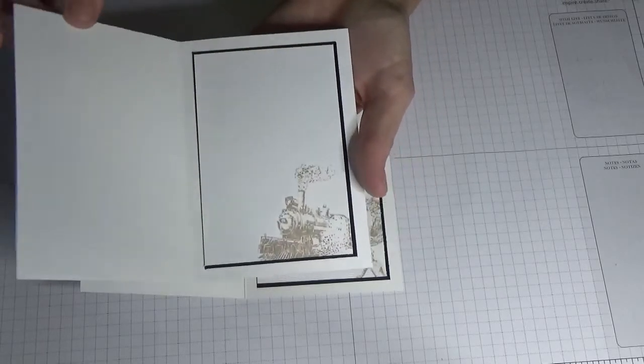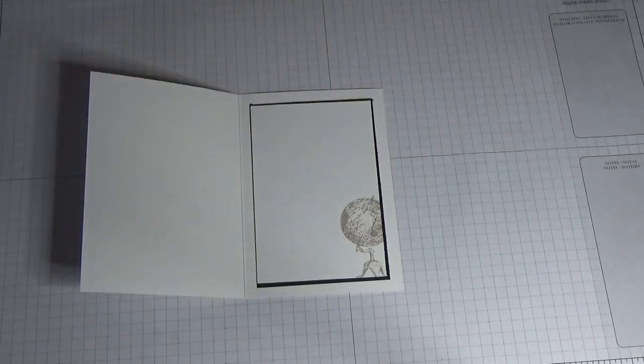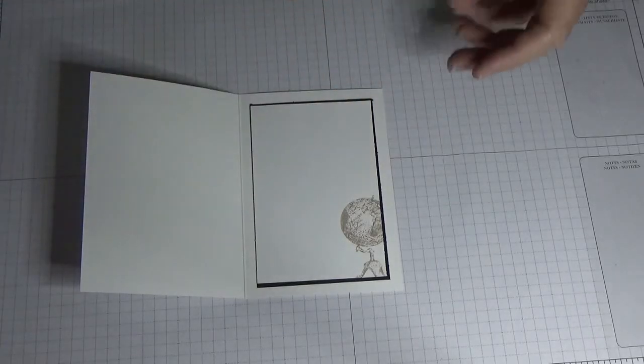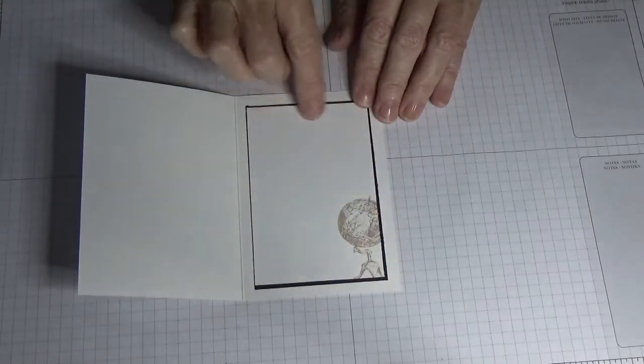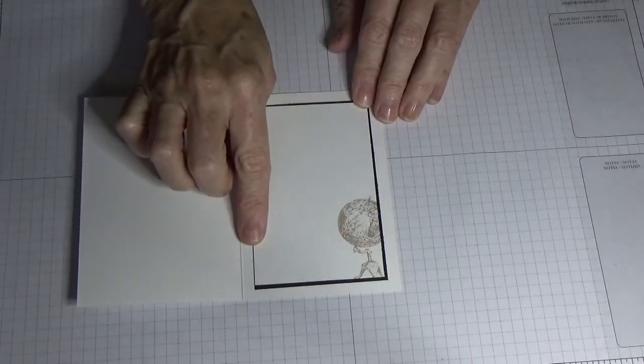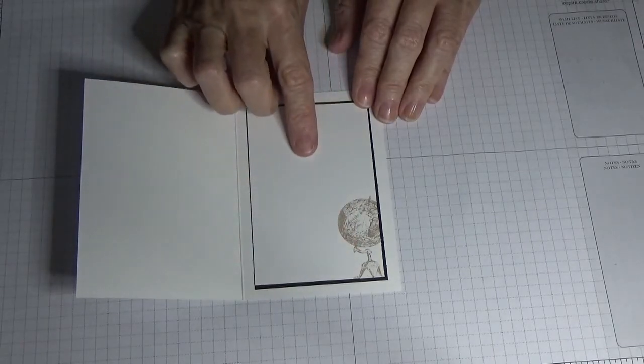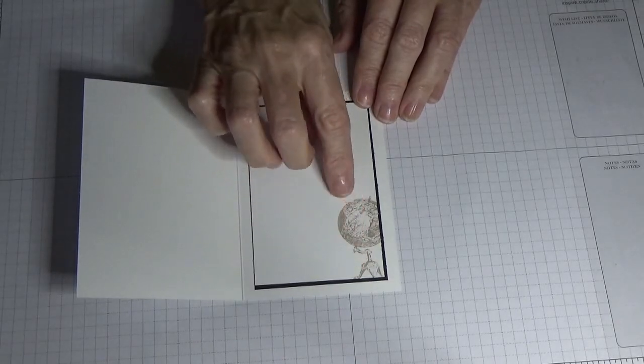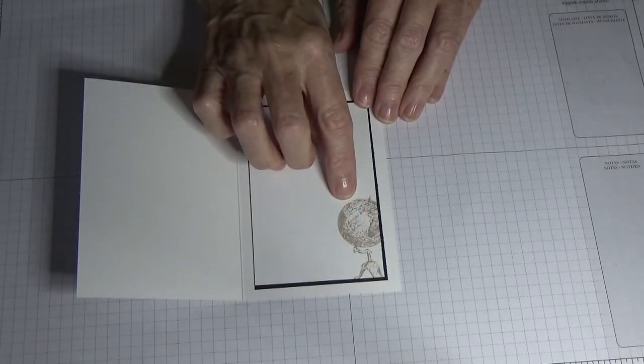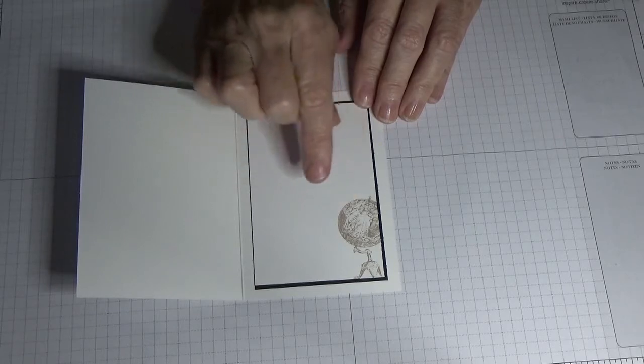It stays on Jet Black after sponging some Whisper White in Bermuda Bay, and then inside I've stamped it with Crumb Cake. So it's up to you what colors you use. I've just used a black mat underneath the Whisper White, and then before sticking the Whisper White down I just used my grid paper.